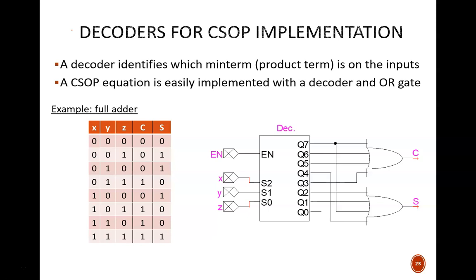We know from earlier in the course that CSOP equations involve the ORing of minterms. And we know now that a line decoder can identify particular minterms. So we can build a circuit simply by ORing together the appropriate outputs from a decoder.